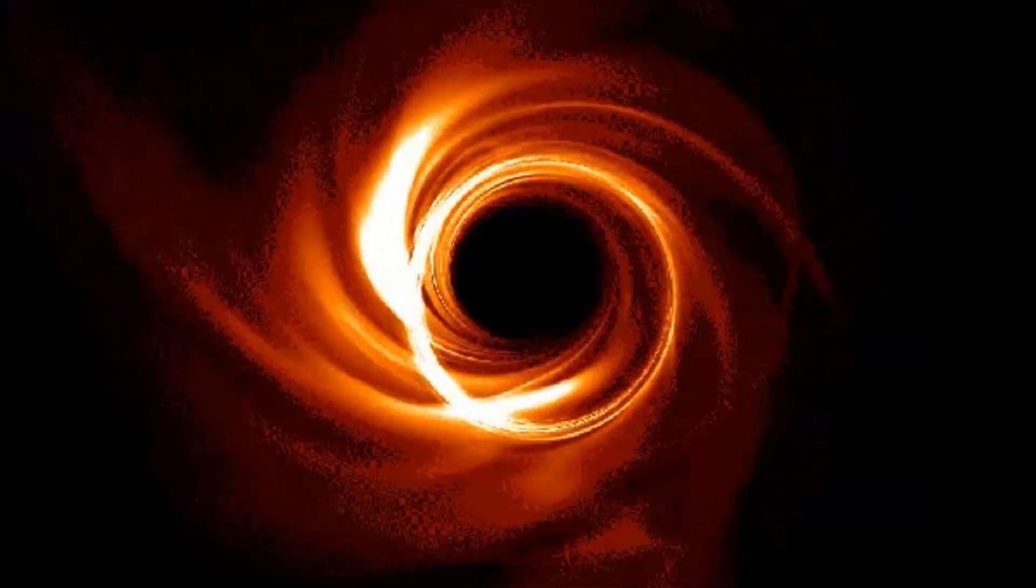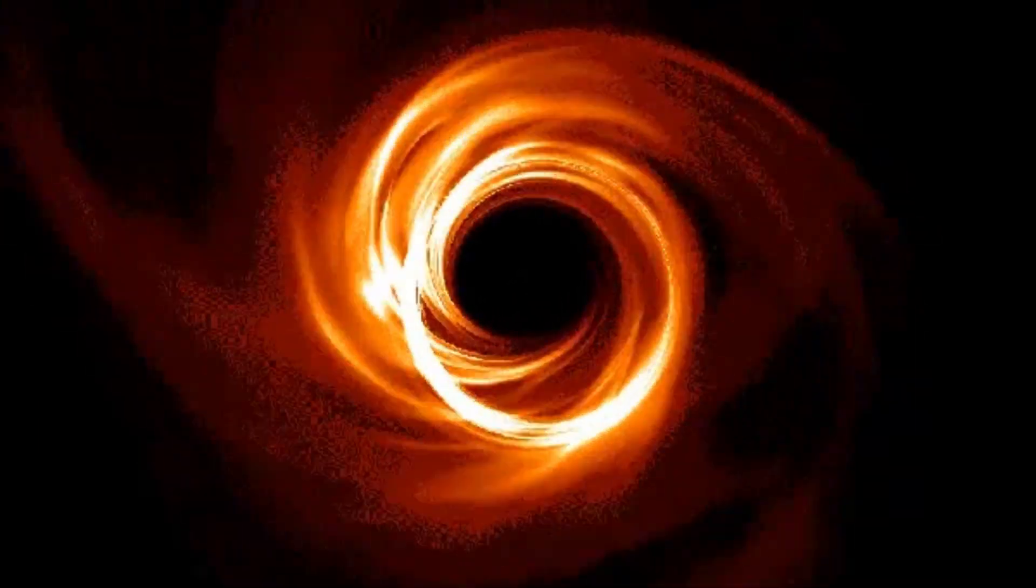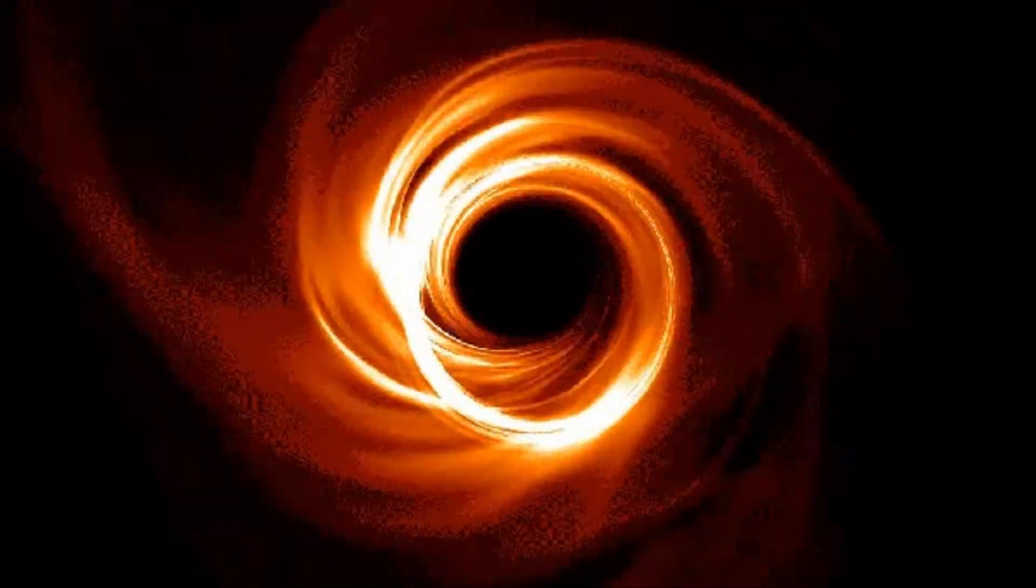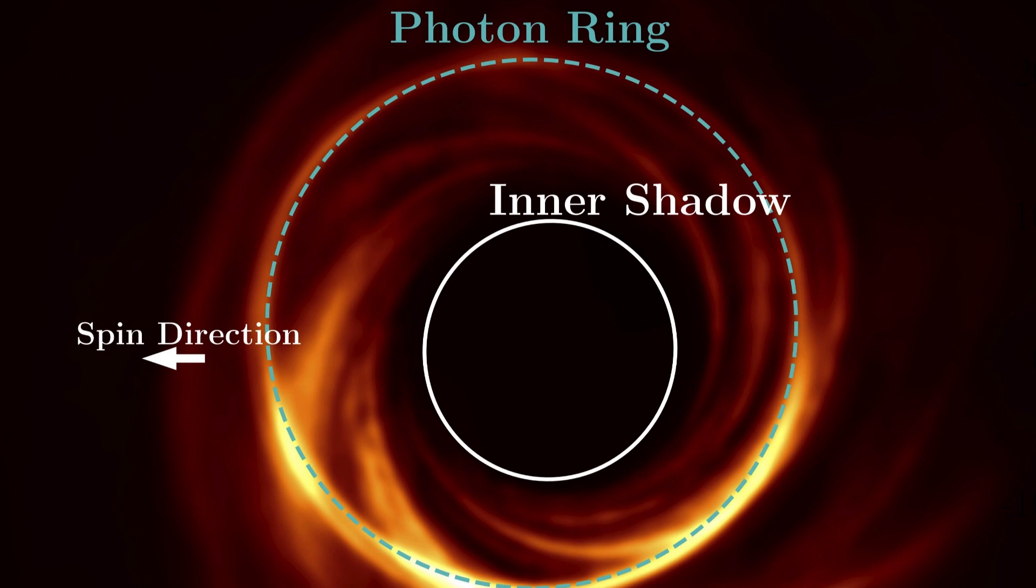The innermost stable circular orbit is the closest distance from the black hole where an object can orbit without falling into the event horizon. The photon ring typically lies within a few times the Schwarzschild radius of the black hole, which measures the size of the event horizon.